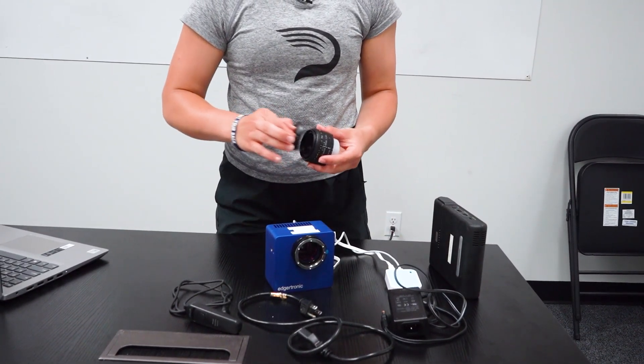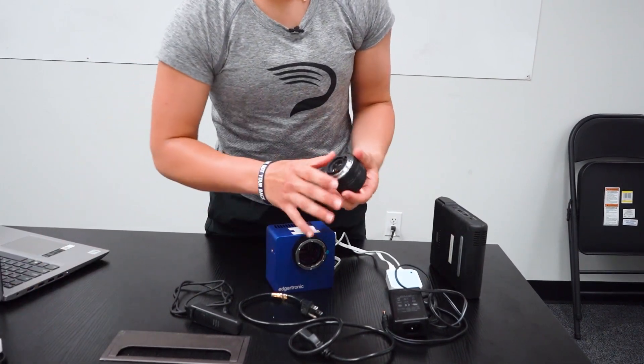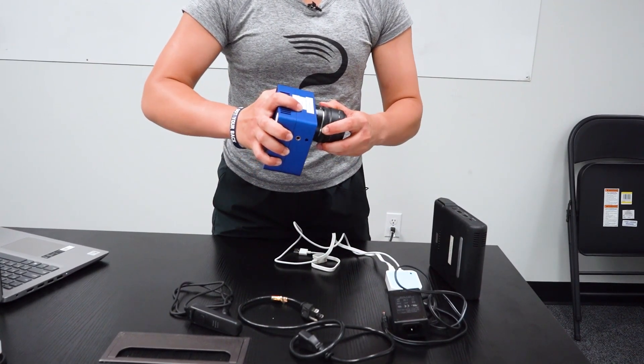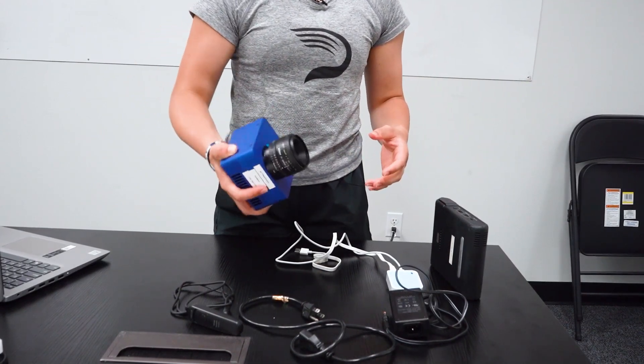So the first thing is I'm going to be putting on the lens. We're just going to take away all these caps and I'm going to be putting it on the camera counterclockwise. That's just going to lock it in so the lens doesn't actually fall off the camera.